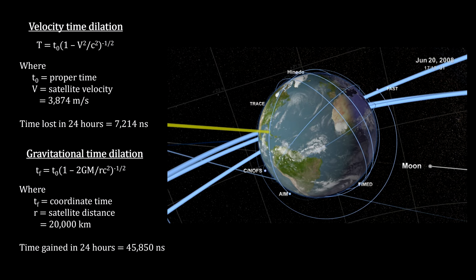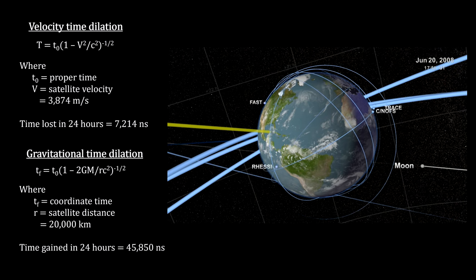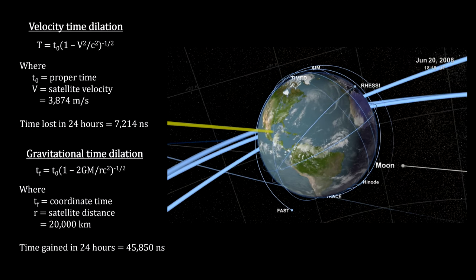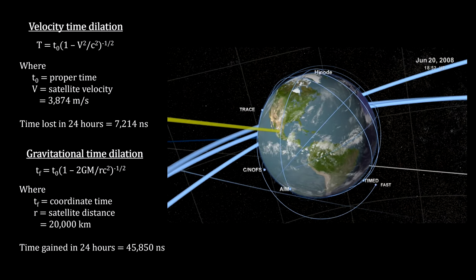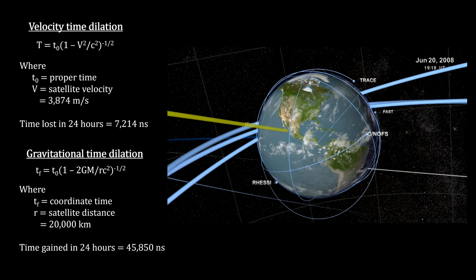They must also take into account gravitational time dilation, due to their being further away from the Earth than clocks on the ground. Based on the Schwarzschild metric, calculations show that the satellites' clocks will gain over 45,000 nanoseconds a day due to this general relativity effect.